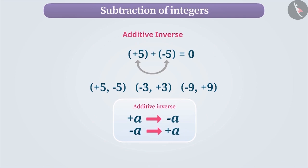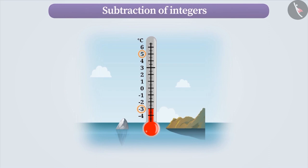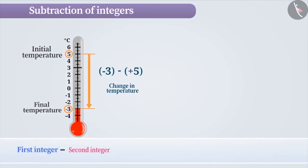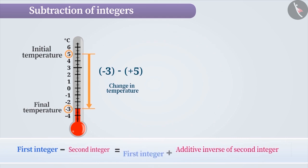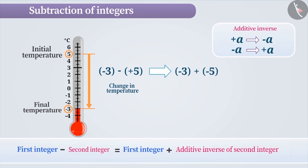Now let's subtract the integers. Suppose the temperature decreases from plus 5 degrees centigrade to minus 3 degrees centigrade. Find out the change in temperature. In order to do so, we need to subtract the final temperature, minus 3 degrees, from the initial temperature of plus 5 degrees. Whenever we subtract one integer from another, we add the additive inverse of the integer being subtracted to the first integer. In this case, if we want to subtract plus 5 from minus 3, then we add to minus 3 the additive inverse of plus 5, that is, we add minus 5. And we've already learned how to add integers. Here, the addition of minus 3 plus minus 5 is minus 8.